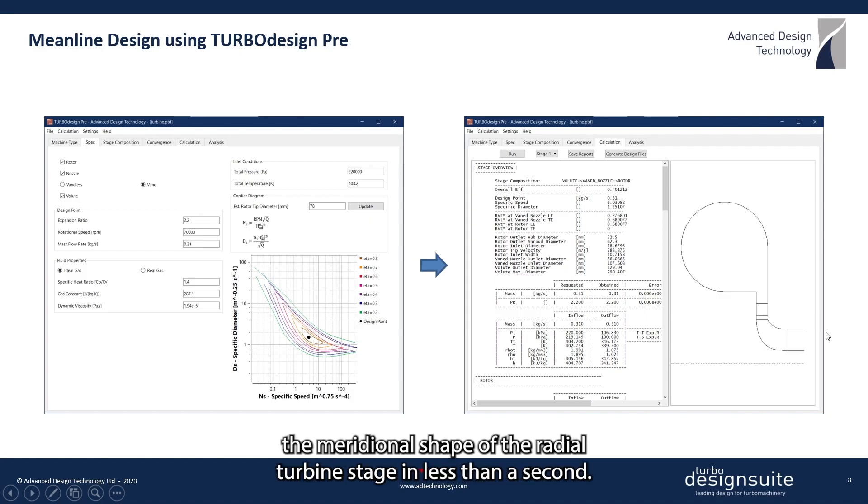It quickly generates the meridional shape of the radial turbine stage in less than a second. As you can see here, it also provides a detailed report including the estimated stage performance and some important dimensions.